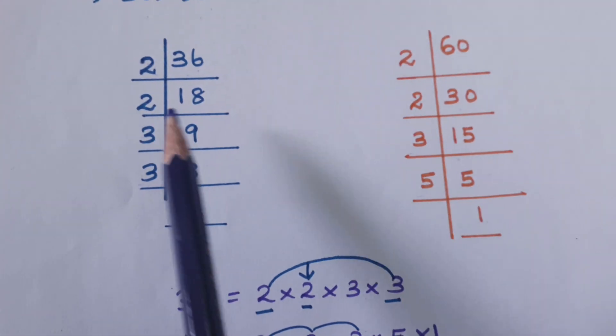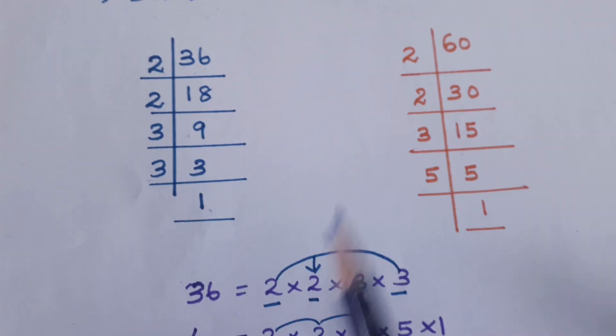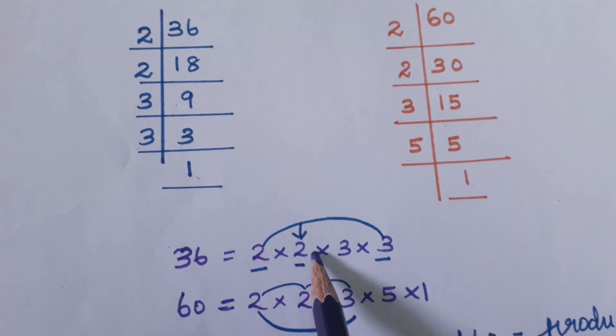Now I'm going to write the factors. For 36, we have 2 × 2 × 3 × 3. For 60, we have 2 × 2 × 3 × 5.